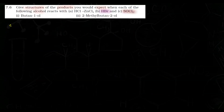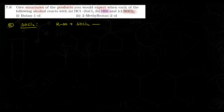Ab hum dekhenge C part — reaction karwani hai with SOCl2 (thionyl chloride). Yaad karo haloalkanes aur haloarenes wale chapter mein padhi hai yeh reaction. Jab aap alcohol ki reaction SOCl2 ke saath karwate hain to milta hai RCl plus SO2 (gas) aur HCl — dono gaseous products escape kar jaate hain, to pure compound milta hai — RCl.